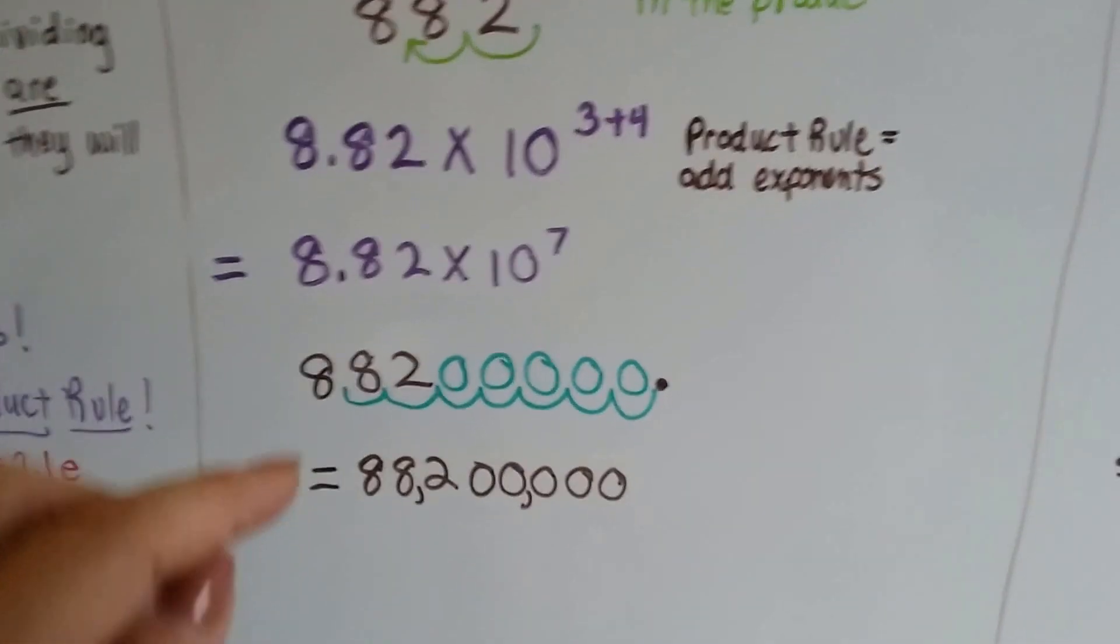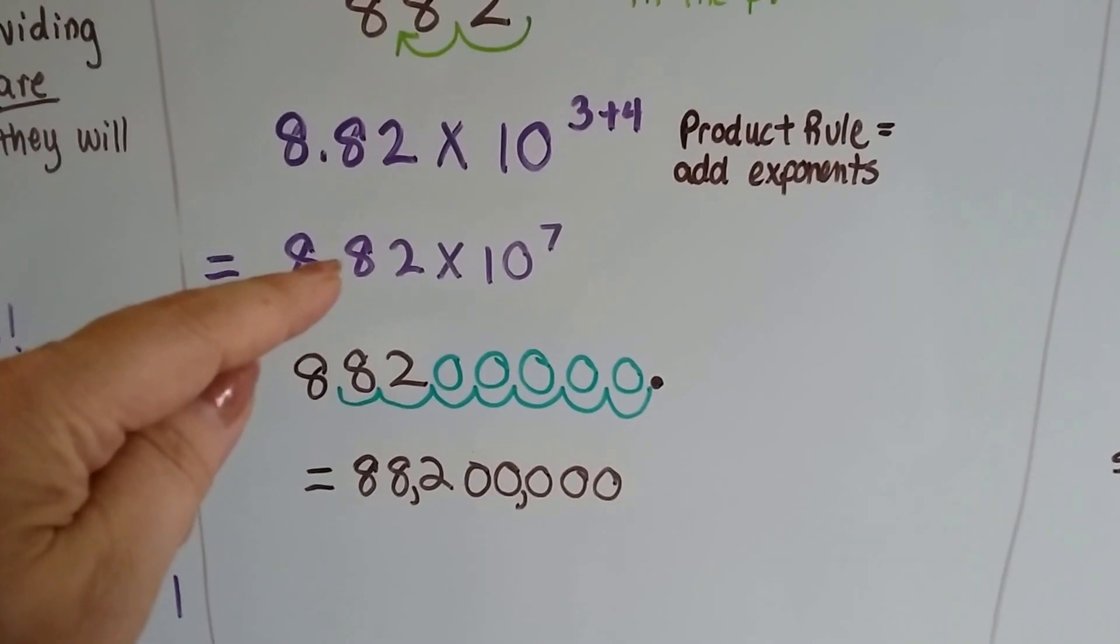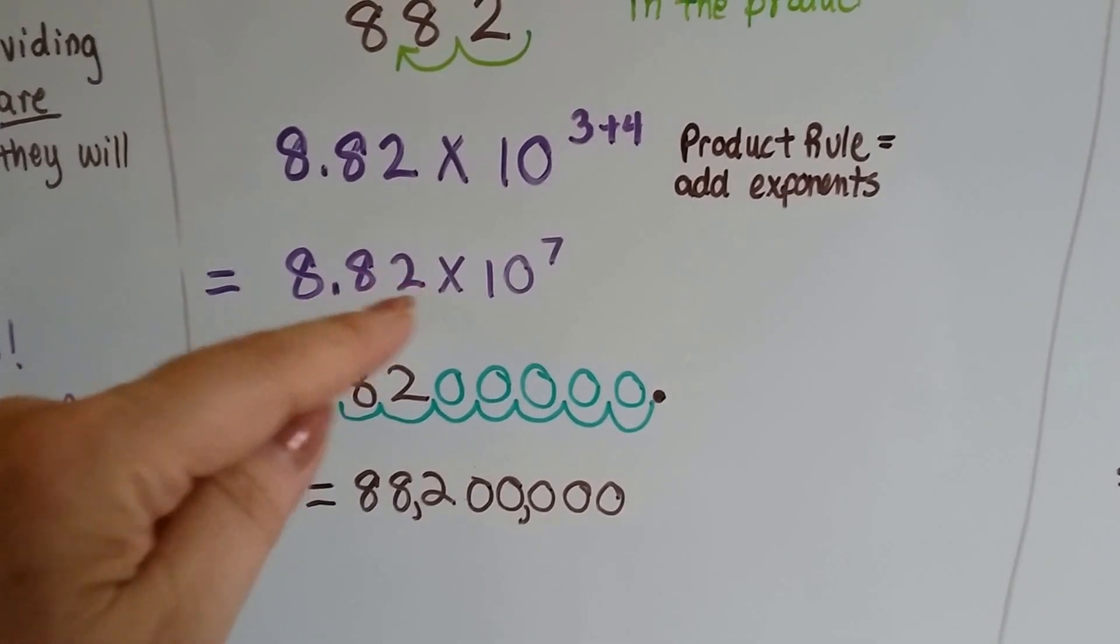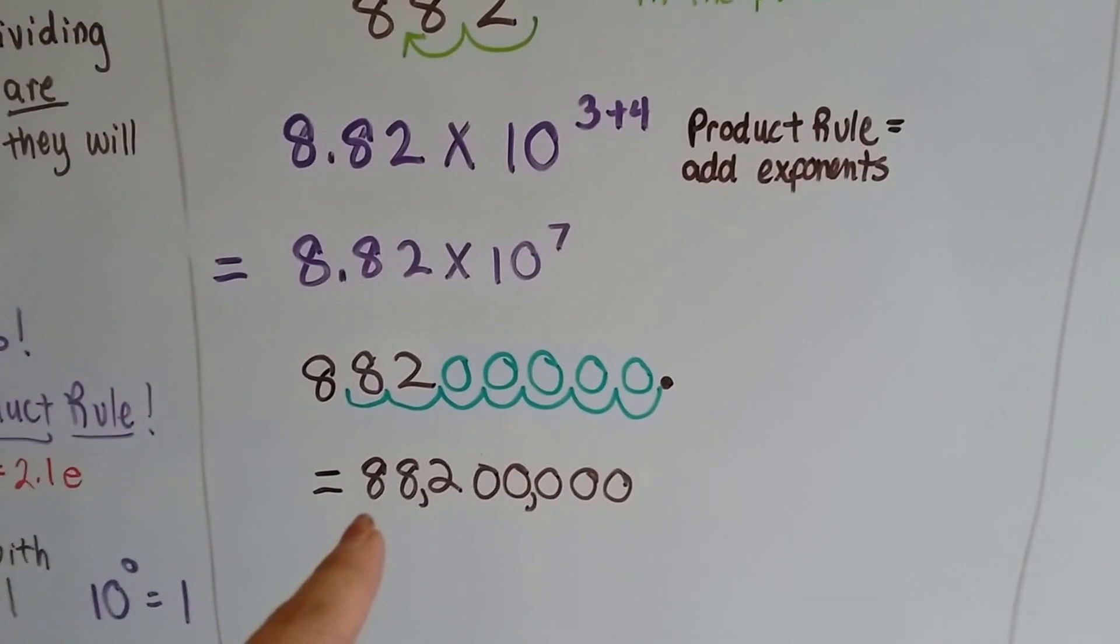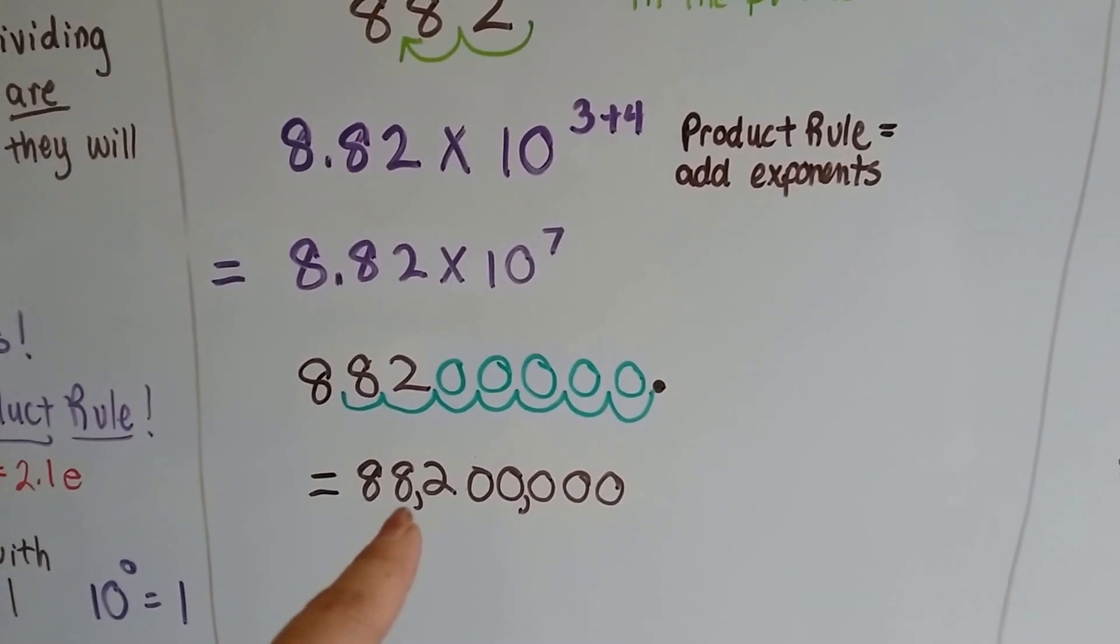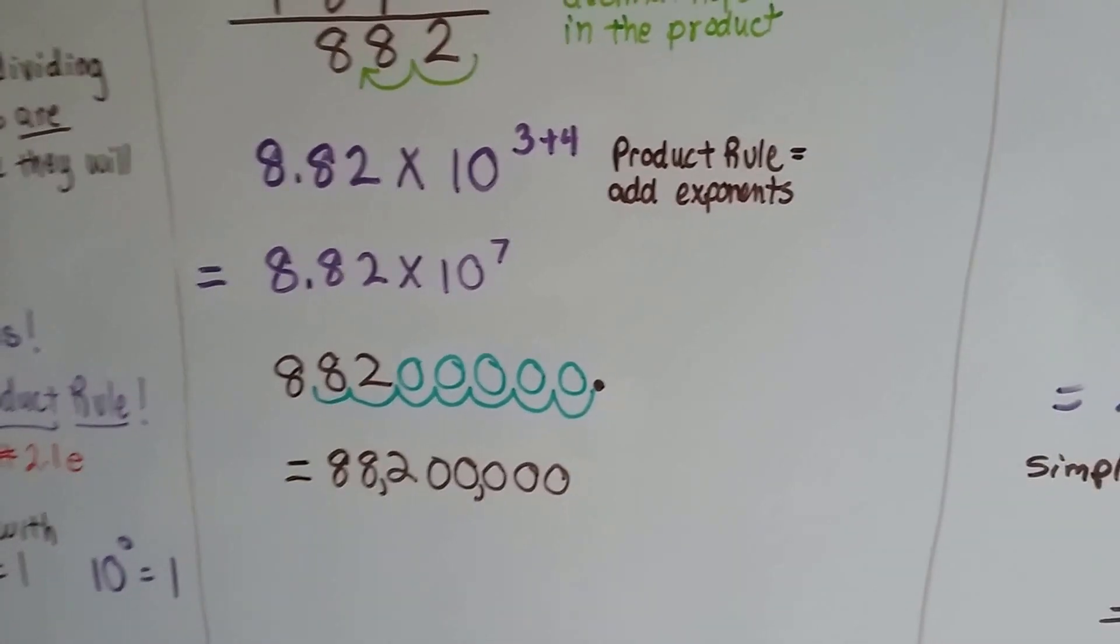Now, if you need to simplify it, we just move our decimal place. 7 hops, 1, 2, 3, 4, 5, 6, 7. We've got 88,200,000. That would be it simplified.